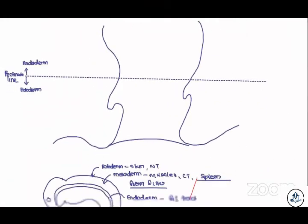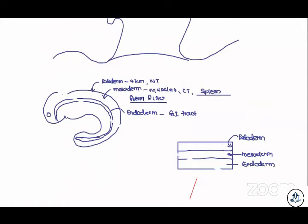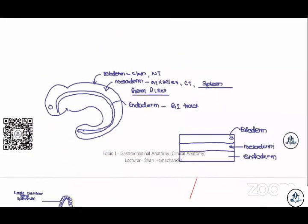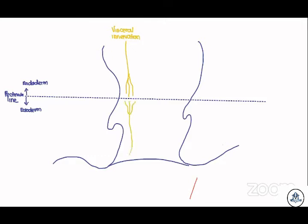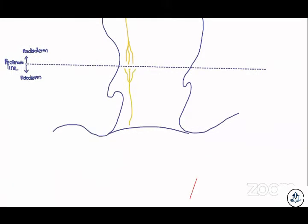Do you guys understand this? Now let's take a look at the nerve innervations, blood vessels, and lymph nodes. Keep a bit of space in the middle when it comes to the blood vessels, because I'll be drawing the hemorrhoids there. Above the pectinate line — the endoderm region — this is going to be the visceral innervation.